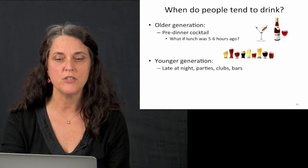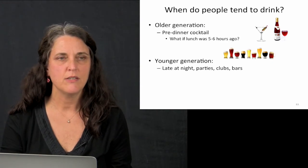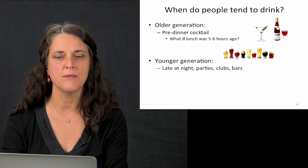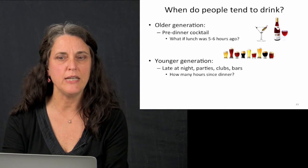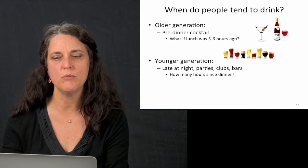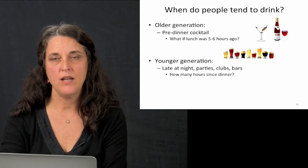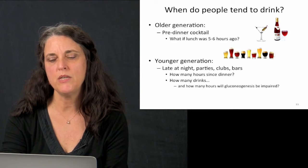What about the younger generation? When do they drink? When does the college-age student drink? It's late at night, after school, after studies, after everything's done. Parties, clubs, nightclubs, all of those times are late at night. And how much do they consume? The more they consume, the bigger the risk. How many hours has it been since dinner? How many drinks have they had? How many hours will gluconeogenesis be impaired?